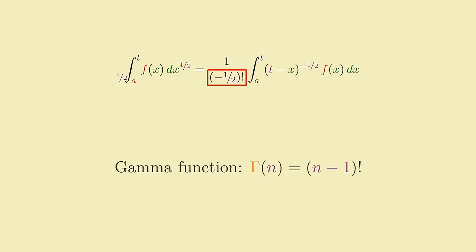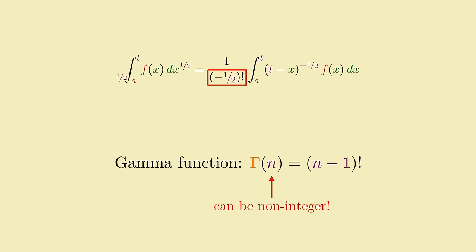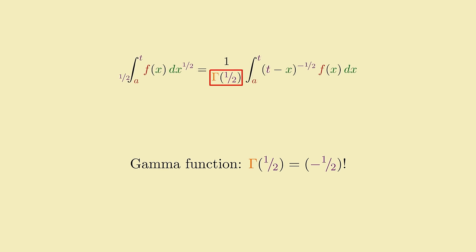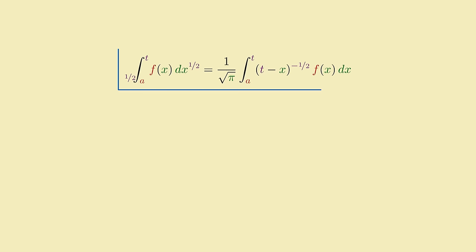Except we can, because there's a function, called the gamma function, that extends the factorial to non-integer inputs in a very nice way. And if we replace the factorial expression in the formula with its equivalent in terms of the gamma function, we gain the ability to plug in non-integers into the formula. For the case of n equal 1 half, gamma evaluates to, of all things, the square root of pi. So putting that in, here's our formula for the half integral of a function f of x.